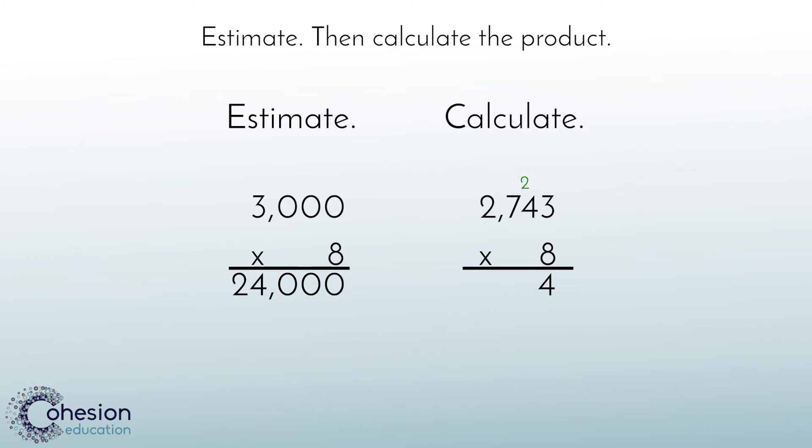The second step is to now multiply the tens. We know from our basic fact that 4 times 8 is 32. Before we can move on, we need to add the 2 regrouped tens to our answer of 32, making it 34.